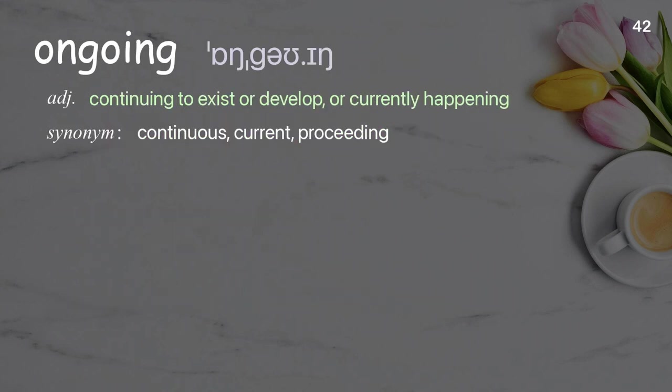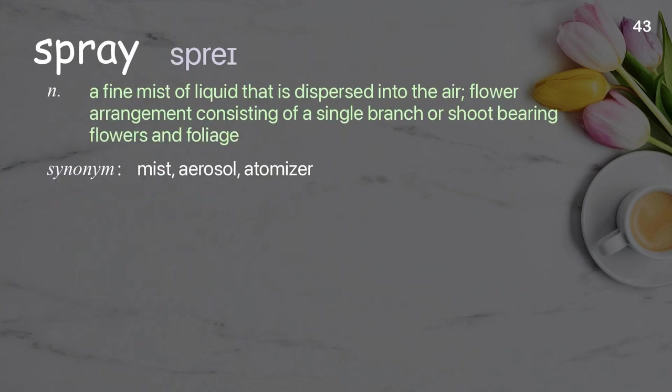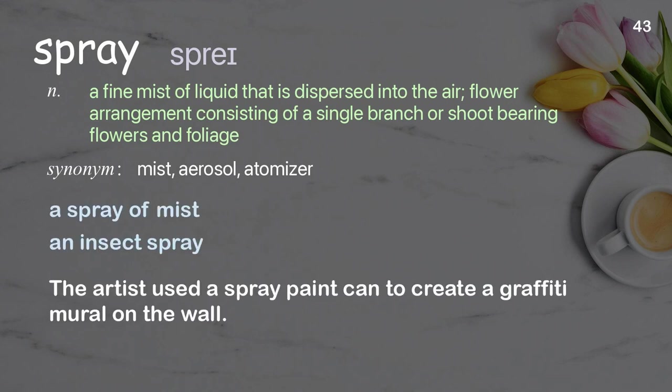Ongoing: continuing to exist or develop, or currently happening. The new prime minister has vowed to take measures against the ongoing economic crisis. Spray: a fine mist of liquid that is dispersed into the air; a flower arrangement consisting of a single branch or shoot bearing flowers and foliage. Examples: a spray of mist, an insect spray. The artist used a spray paint can to create a graffiti mural on the wall.